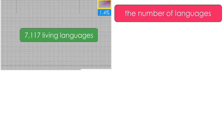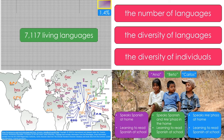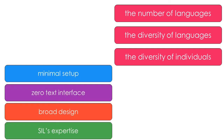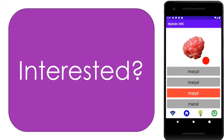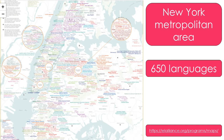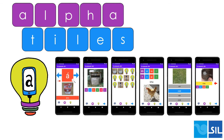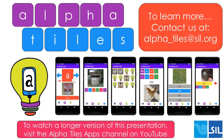Let's summarize. There are three big challenges: the sheer number of languages, the diversity of those languages, and the diversity of language situations for each individual in each community. Our approach is to use a minimal setup with zero text interface and to focus on the broadest possible design, and we have the benefit of SIL's expertise in minority languages. You might think you work in the US and these languages don't apply — but there are actually some 650 languages in the New York metropolitan area alone, and these neighborhoods have even been mapped out. There are numerous opportunities to support minority language literacy initiatives all across the US. Wherever you are, we would love to hear from you. Thank you so much for this opportunity to share.